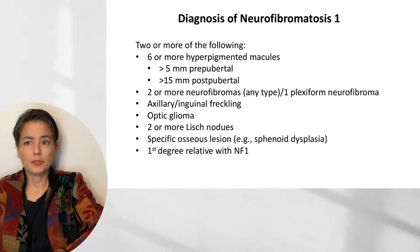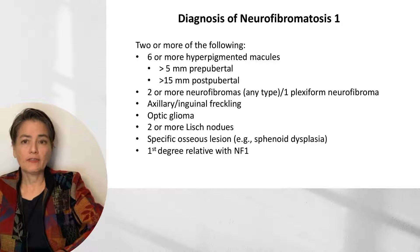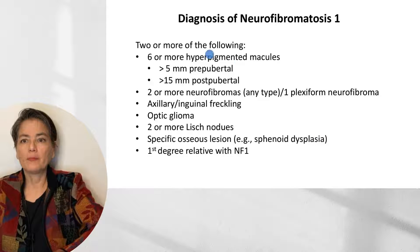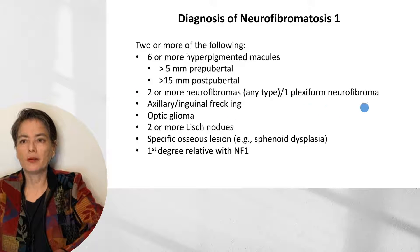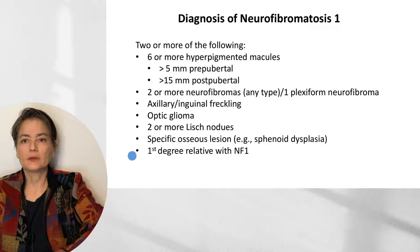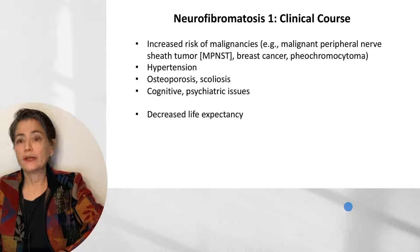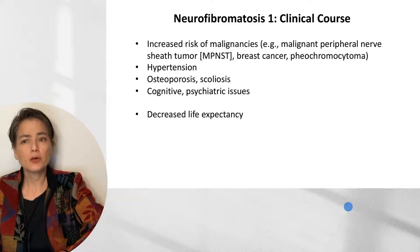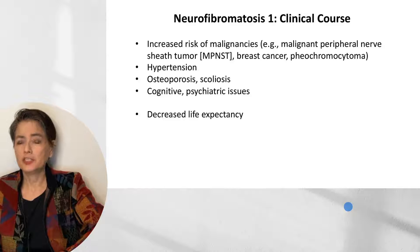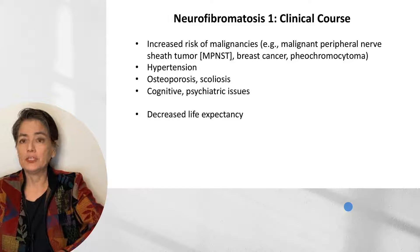To make a diagnosis of neurofibromatosis type 1, we identify two or more of the following: six or more hyperpigmented macules, neurofibromas — two or more of any type, or one plexiform neurofibroma, highlighting the diagnostic importance of plexiform neurofibromas, as well as other features. Patients with NF1 are at increased risk of malignancies, including malignant peripheral nerve sheath tumor, breast cancer, and pheochromocytoma. They are also susceptible to hypertension, osteoporosis, scoliosis, cognitive and psychiatric issues, and have a decreased life expectancy.